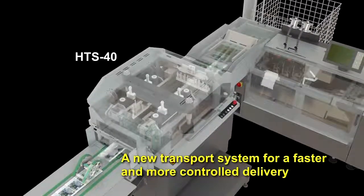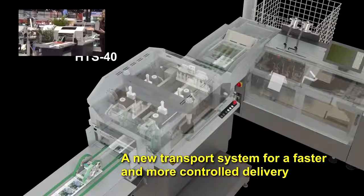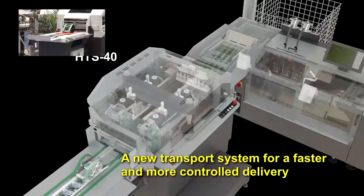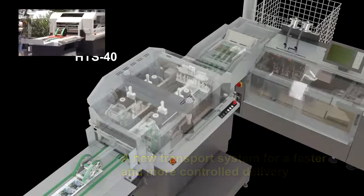Stitched booklets are transferred to the all-new HTS-40 for final three-knife trimming. A new transport system delivers booklets into the trimmer faster and with more control, even with lighter substrates and thinner booklets.